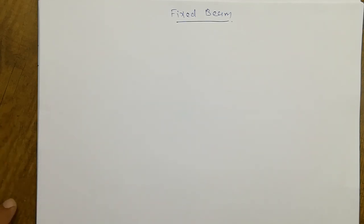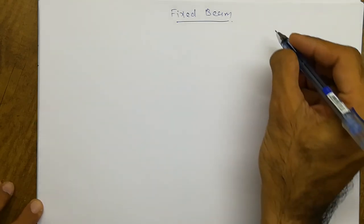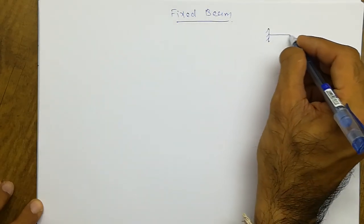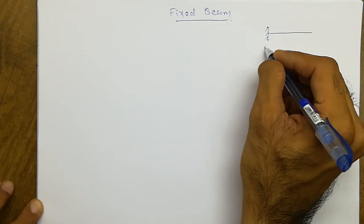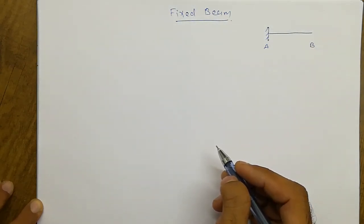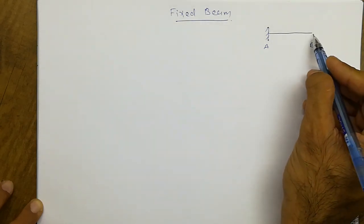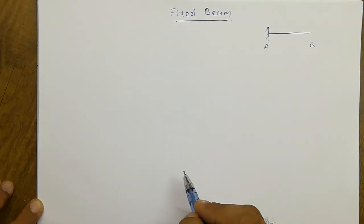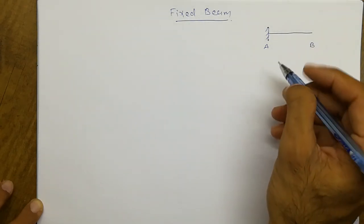In fixed beam, first of all we should know the characteristic of the support. As you know, if one end is fixed — suppose we have the beam AB in which support A is a fixed support and support B is a free support — that is called